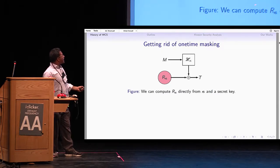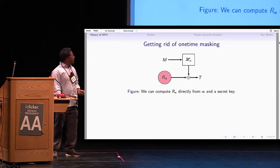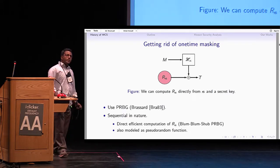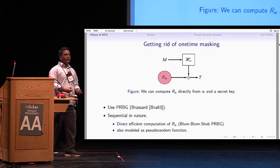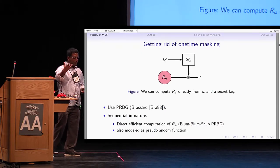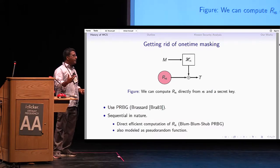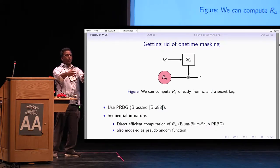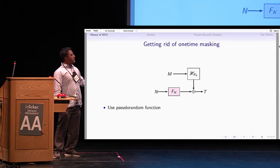The next issue is how to get rid of this random string that is refreshed every time — we need one-time randomness. We have to compute R_n directly from the secret key and the message number. One solution, proposed in 1983, uses a bit generator extracting a mask. But if message numbers arrive in random order, you must compute the n-th random keystream directly. This models the PRF, which takes a nonce as input and masks your hash output.